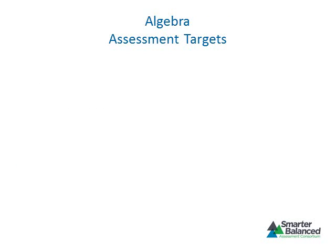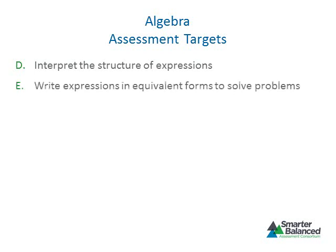Seven assessment targets have been defined for algebra. The first target focuses on interpreting the structure of expressions and requires students to recognize equivalent forms of an expression as determined by the expression structure. The second target focuses on writing expressions in equivalent forms to solve problems, requiring students to choose or produce an equivalent form of an expression including factoring a quadratic expression, completing the square, and using properties of exponents. The third target focuses on performing arithmetic operations on polynomials and requires students to add, subtract, and multiply polynomials.